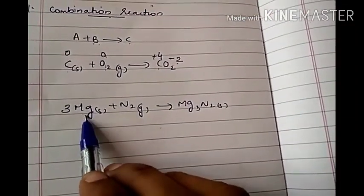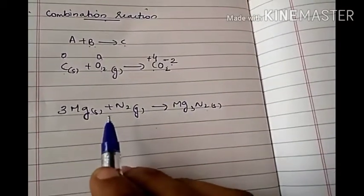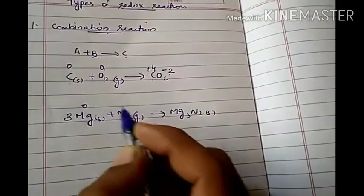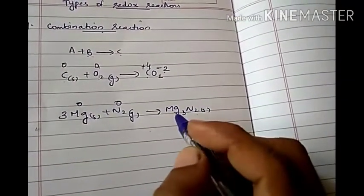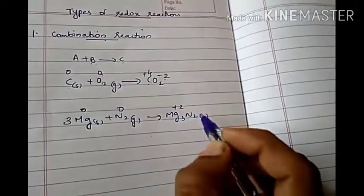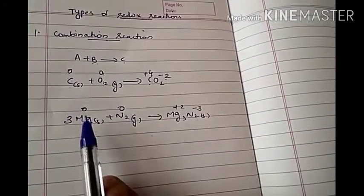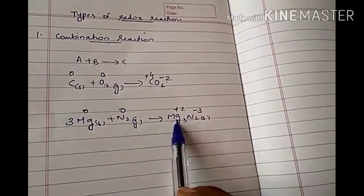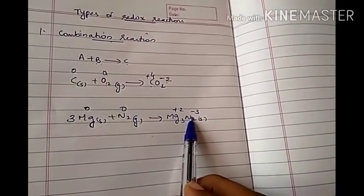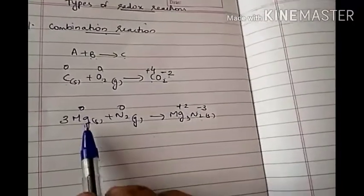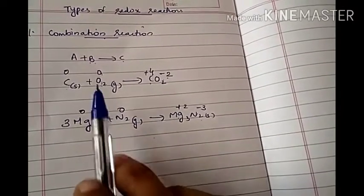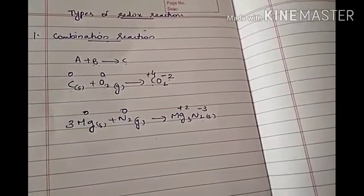Another example is 3Mg + N₂ gives Mg₃N₂. We can check whether it is a redox reaction. Mg is in elemental form, its oxidation number is zero. N₂ is also in elemental form, its oxidation number is zero. In Mg₃N₂, the oxidation number of magnesium is plus two and that of nitrogen is minus three. Magnesium's oxidation number is increasing from zero to plus two — so it is undergoing oxidation. Nitrogen's oxidation number is decreasing from zero to minus three — so it is undergoing reduction. Both oxidation and reduction occur, so this is also a redox reaction and an example of a combination reaction.